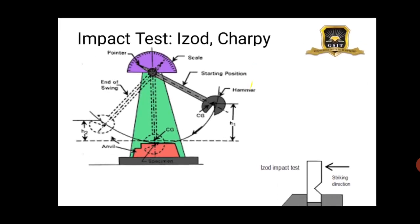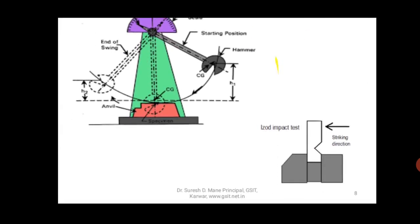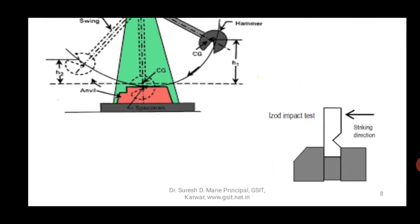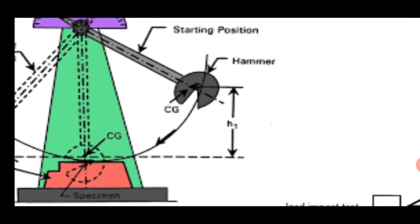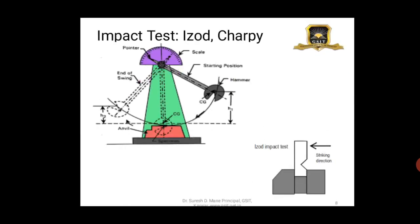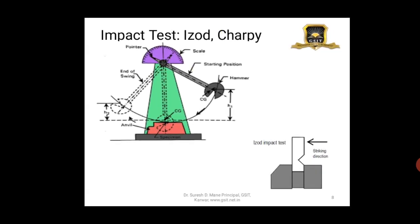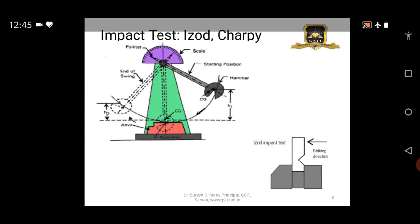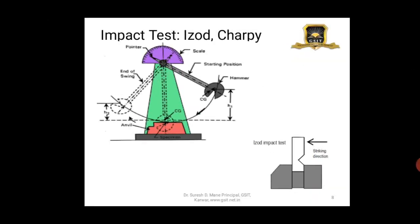You also have the impact test, like the Izod test and the Charpy test. The standard specimen is given with a proper notch, then this hammer swings and strikes the specimen, breaking it. Whatever amount of energy is absorbed is shown on the purple-colored dial with a scale and pointer, and you get the reading. This is for the Izod and Charpy test — again a destructive test.